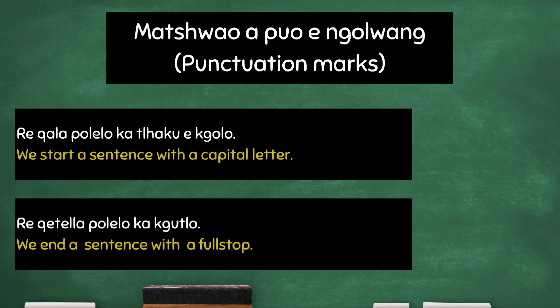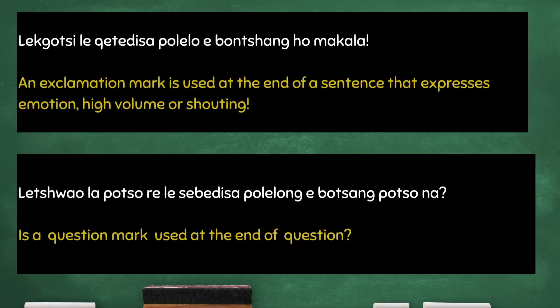We start a sentence with a capital letter. We end a sentence with a full stop. An exclamation mark is used at the end of a sentence that expresses emotion, high volume, or shouting. There is a question mark used at the end of a question.